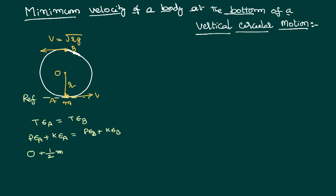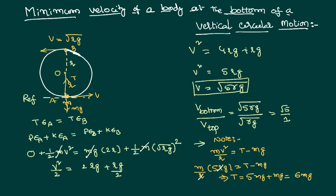Kinetic energy at A is ½mV², where V is what we want to calculate. Potential energy at point B is mg × 2R, where 2R is the height of that body with reference to point A — because radius plus radius equals the diameter. The kinetic energy at B is ½mv², where velocity at the top equals √(Rg) as proved previously, so v² = Rg. We can cancel masses on both sides of the equation.